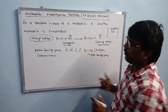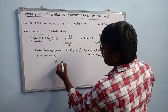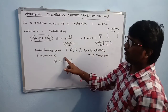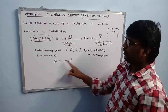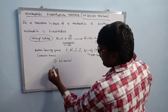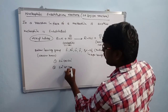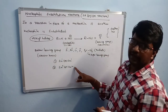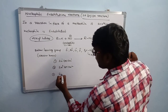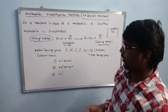Nucleophilic substitution reactions are mainly three types. First is SN1 (or DN1) — unimolecular nucleophilic substitution or displacement. Second is SN2 (or DN2) — bimolecular nucleophilic substitution. Third is SNi — intramolecular nucleophilic substitution reaction.